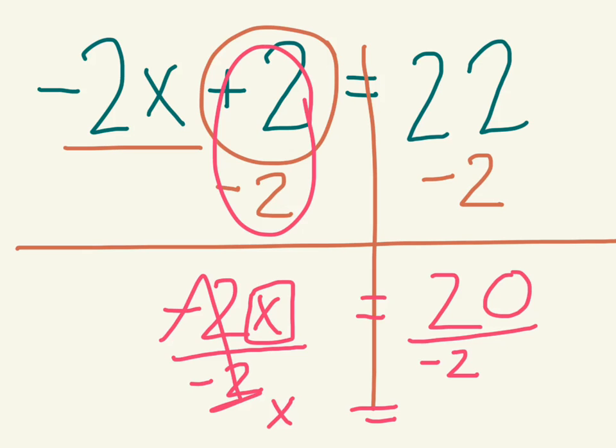When I do 20 divided by negative 2 in my calculator, I get negative 10. x equals negative 10.